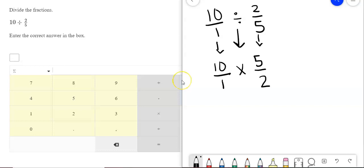My division sign is going to change to multiplication, and I'm going to flip the second number. I'm looking for cross-canceling, and I'm going to look at this two and ten because I know two goes into two once. Two goes into ten five times. Now we have one times five is twenty-five. And then we have one times one is one.